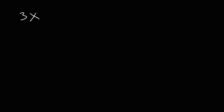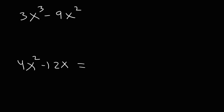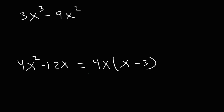Let's try two similar problems. Let's factor 3x cubed minus 9x squared, and also 4x squared minus 12x. For the second one, we take out the GCF of 4x: 4x squared divided by 4x is x, and negative 12x divided by 4x is minus 3. So that's how we factor that expression.